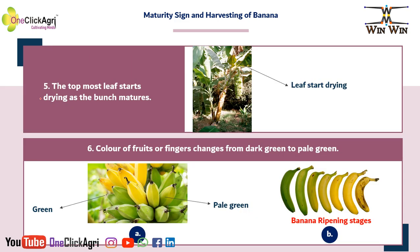Fifth sign: the topmost leaf of the banana plant starts drying as the bunch matures. You will see here the topmost leaves starting to dry.